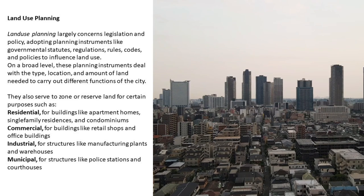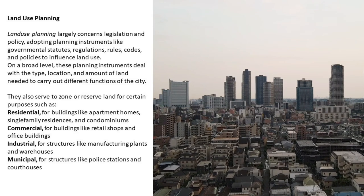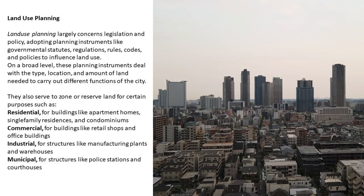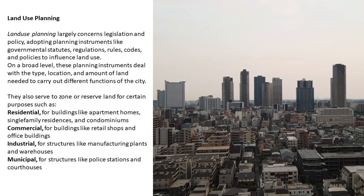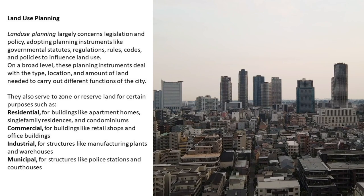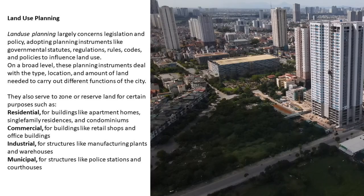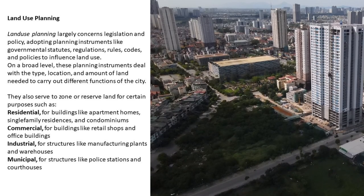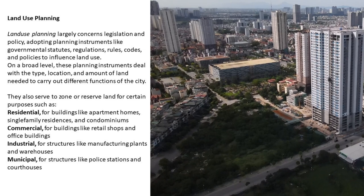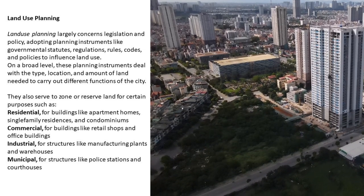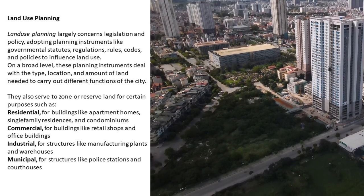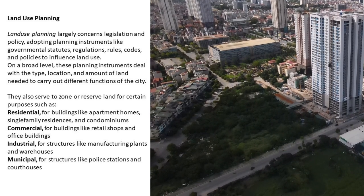Land use planning largely concerns legislation and policy, adopting planning instruments like governmental statutes, regulations, rules, codes, and policies to influence land use. On a broad level, these planning instruments deal with the type, location, and amount of land needed to carry out different functions of the city. They also serve to zone or reserve land for certain purposes such as residential for buildings like apartment homes, single-family residences, and condominiums; commercial for buildings like retail shops and office buildings; industrial for structures like manufacturing plants and warehouses; and municipal for structures like police stations and courthouses.